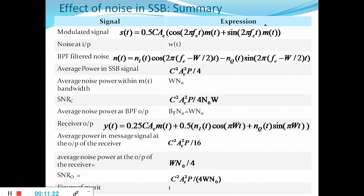Lastly, the figure of merit is the ratio of SNR at the channel to SNR at the output, which equals 1. In the next presentation, I will be explaining the performance of AM radio receivers. Thank you.